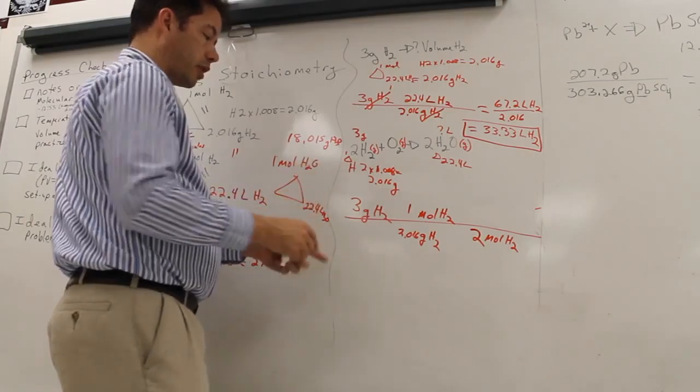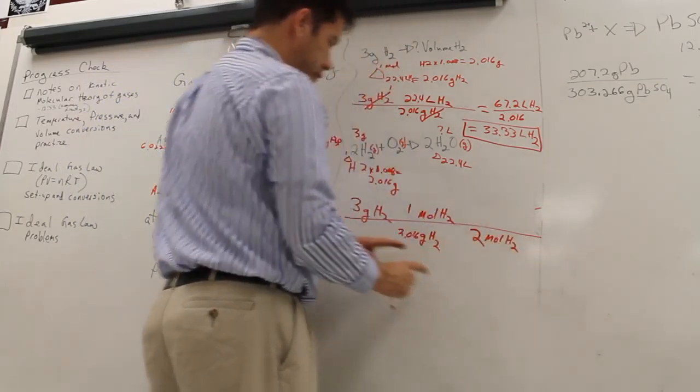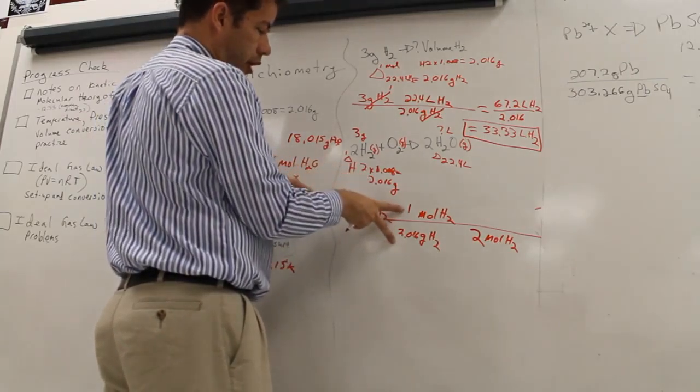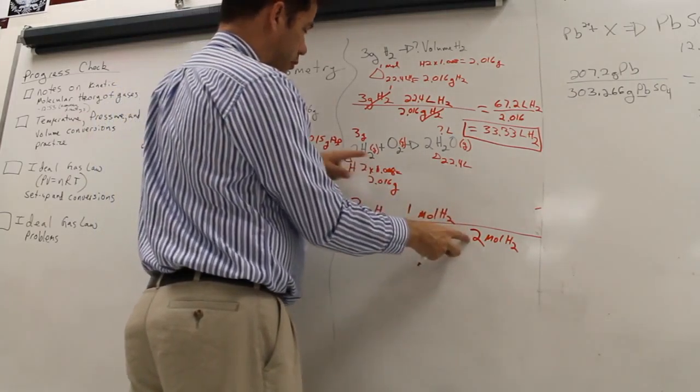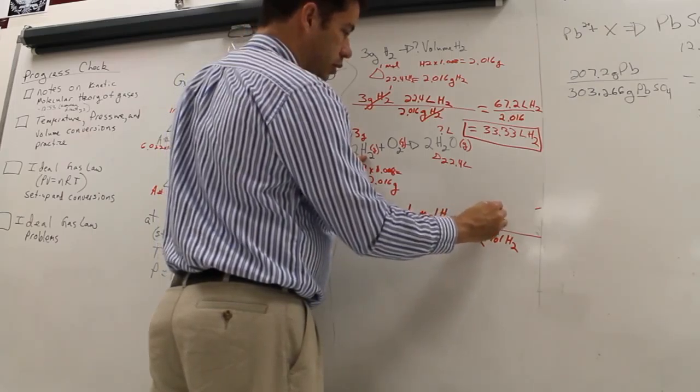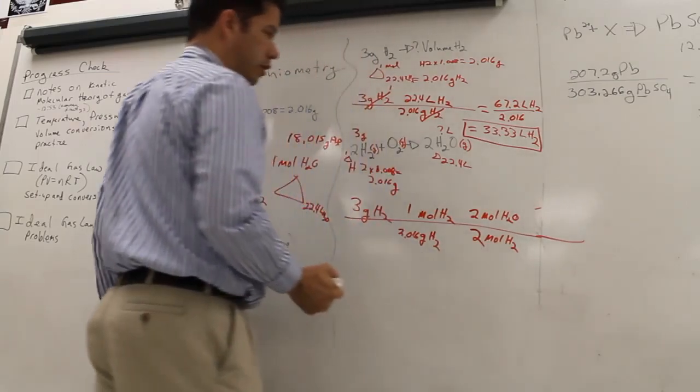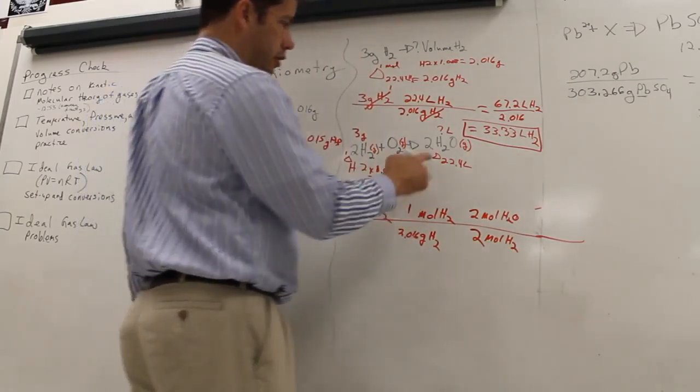I had the backwards up there. Given, triangle, reaction, triangle. So given, triangle, reaction, two moles of H2 to two moles H2O, and now triangle, which is here.